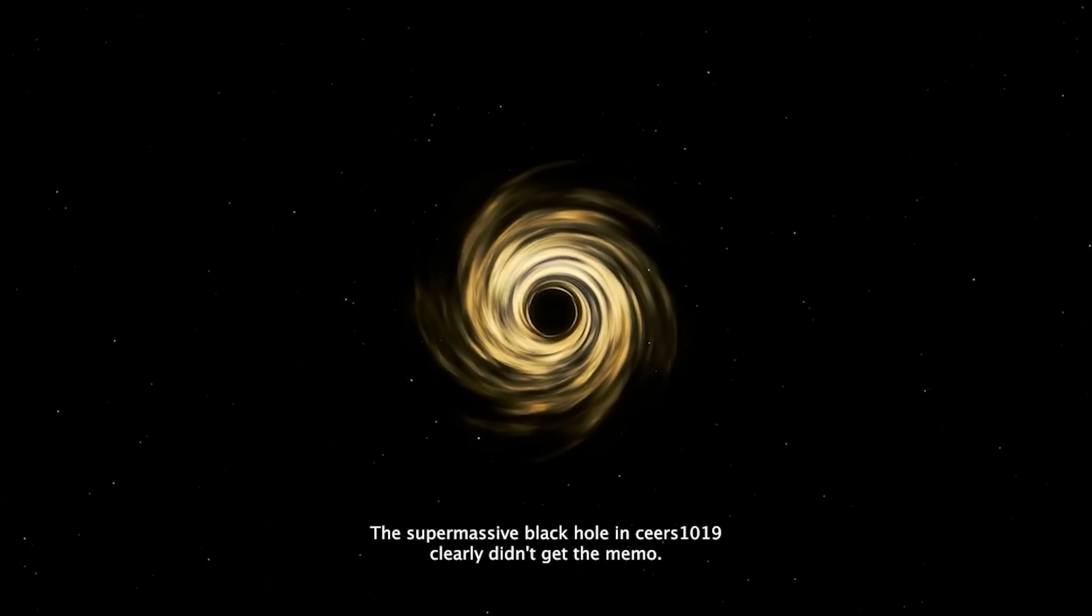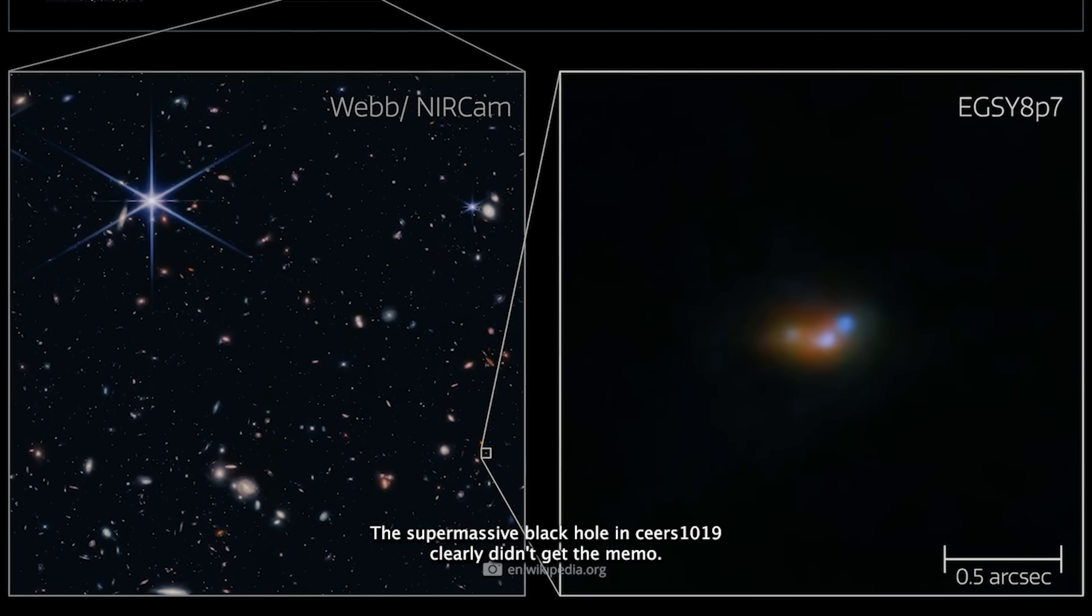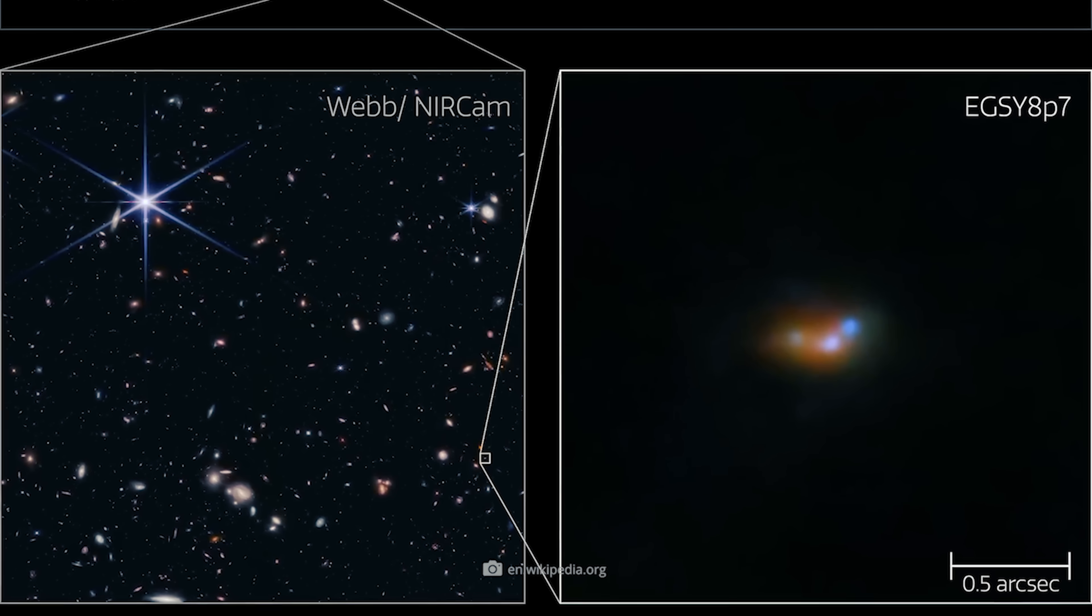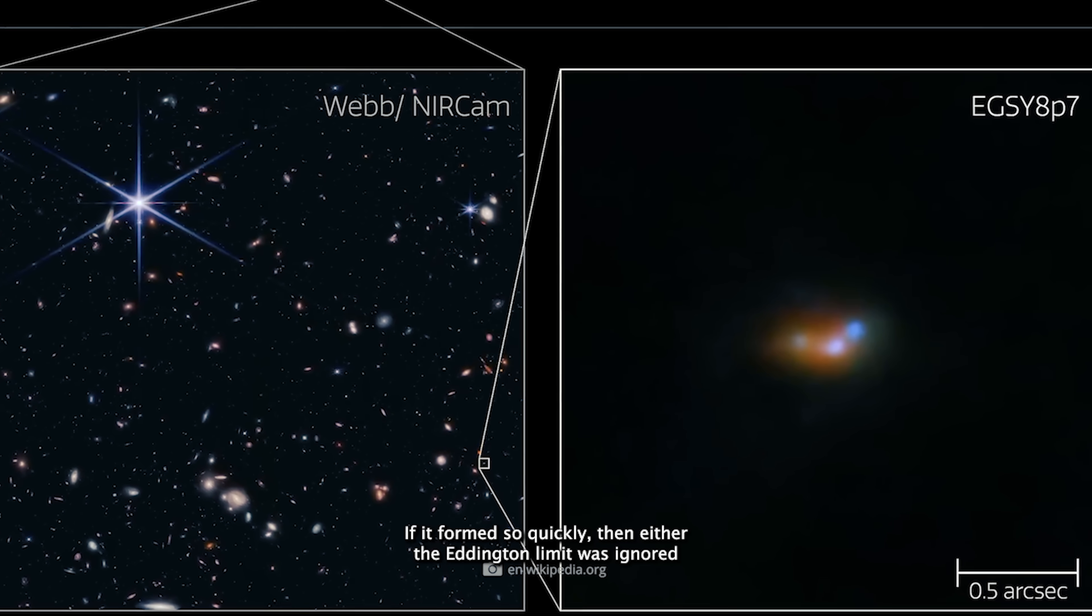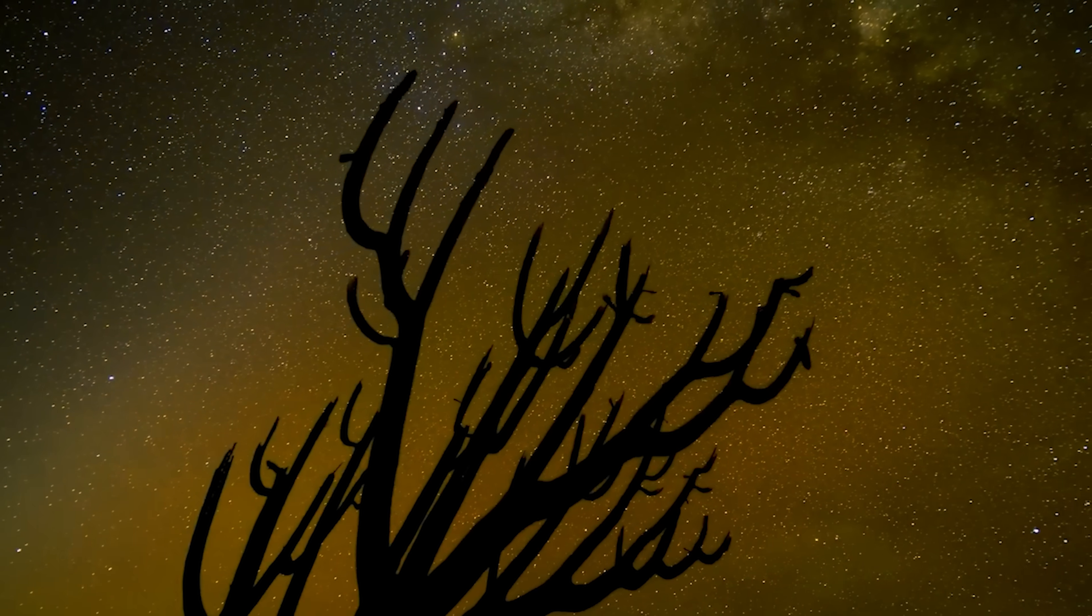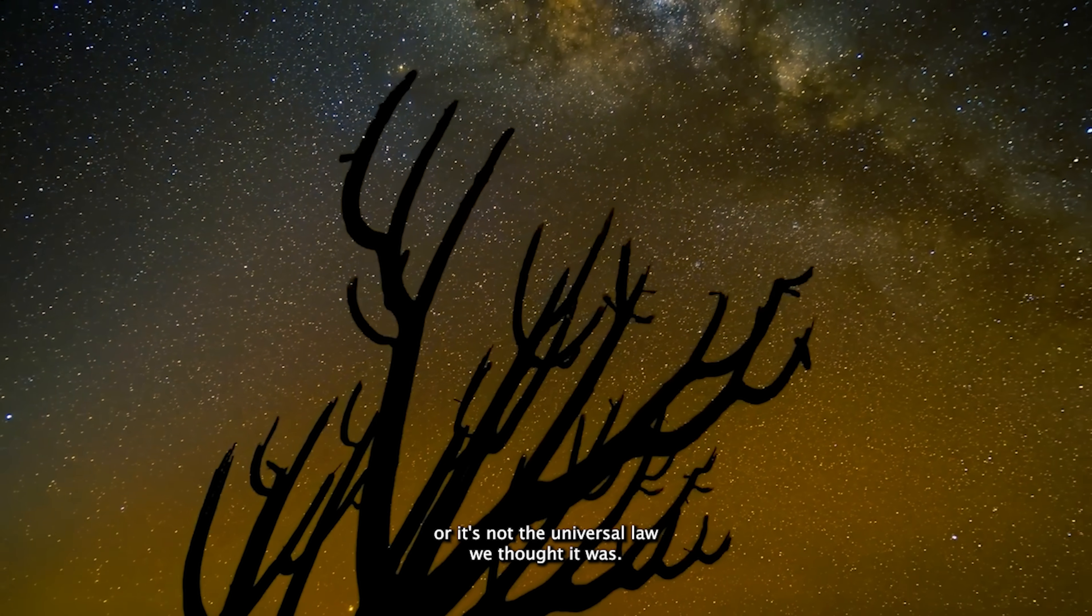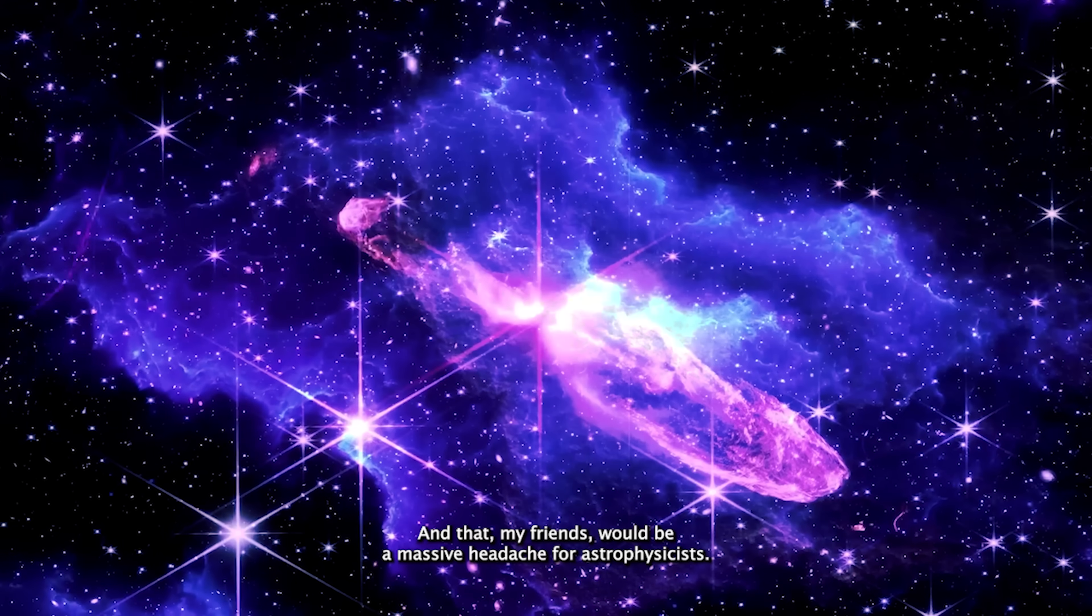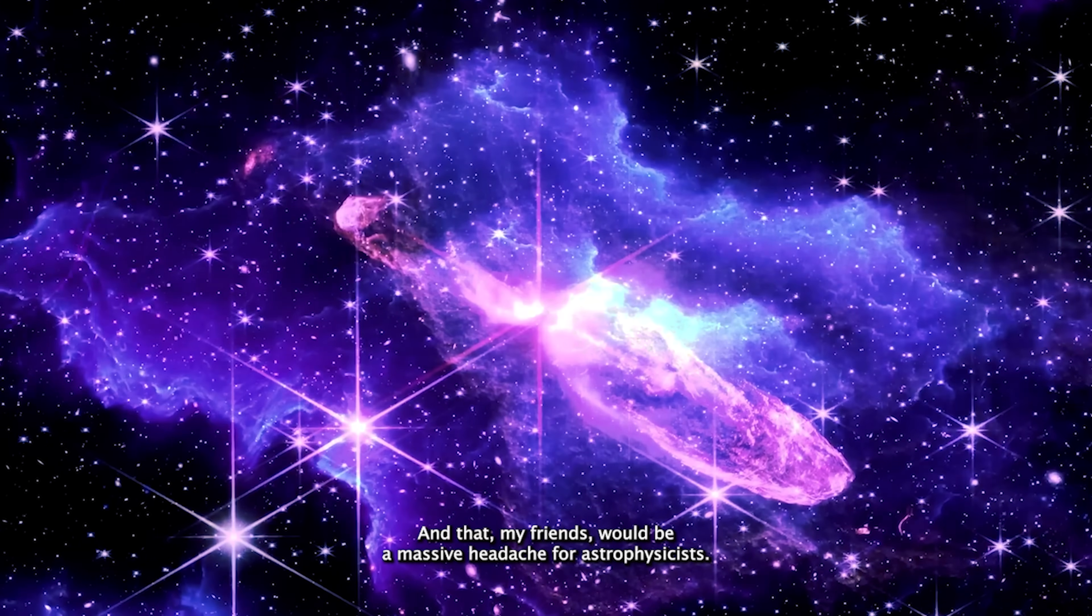But here's the catch. The supermassive black hole in Sears 1019 clearly didn't get the memo. If it formed so quickly, then either the Eddington limit was ignored, or it's not the universal law we thought it was. And that, my friends, would be a massive headache for astrophysicists.